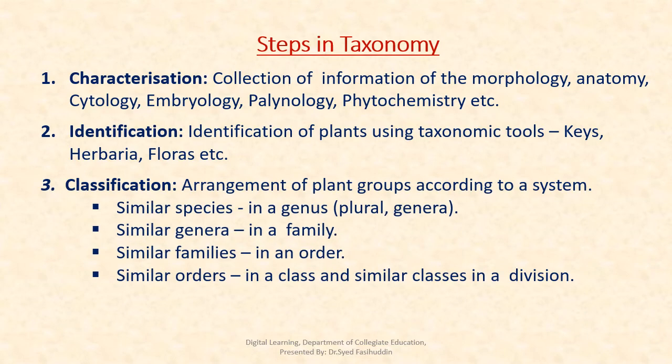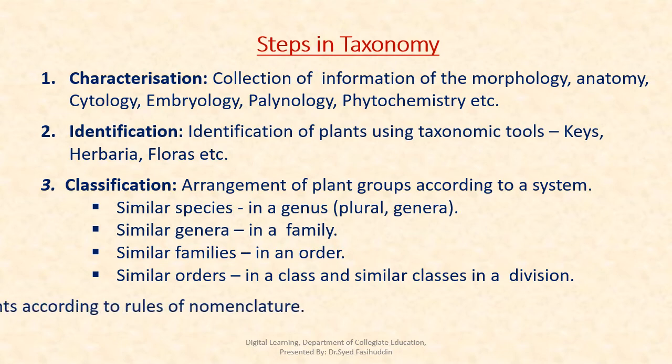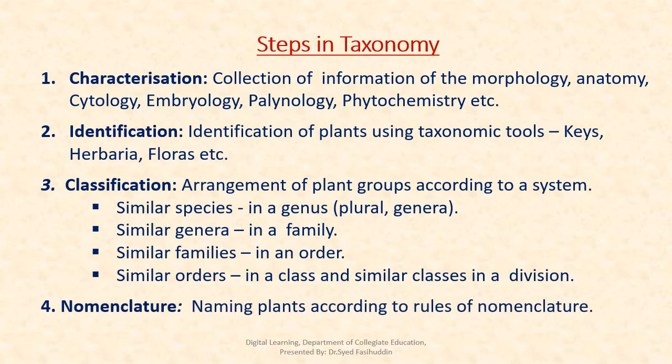The third step is classification — the arrangement of plants or plant groups according to a system of classification. Similar species are put in a single genus; similarly, many similar genera are put in a family, similar families in an order, similar orders in a class, similar classes in a division, and so on. The fourth step is nomenclature — naming plants according to the rules of nomenclature.